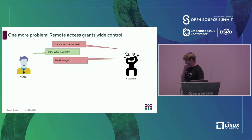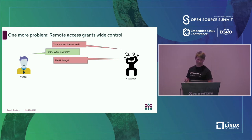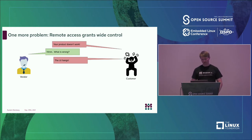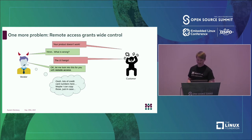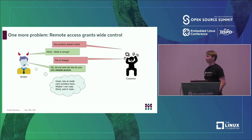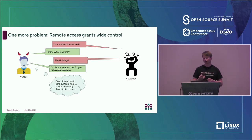Going back to the use cases — file transfer, terminal — we know the network is going to be difficult. But there is one more thing to think about, especially if you're doing it in production with customers. What could happen if a product doesn't work, the UI hangs, and now the vendor has remote access? If you give somebody full access to all devices, bad things could happen. You shouldn't necessarily blindly trust the person at the other end. And at least in Europe, there is regulation around this, especially if there's personal identifying information on the devices. You can't just let anyone get access to that.